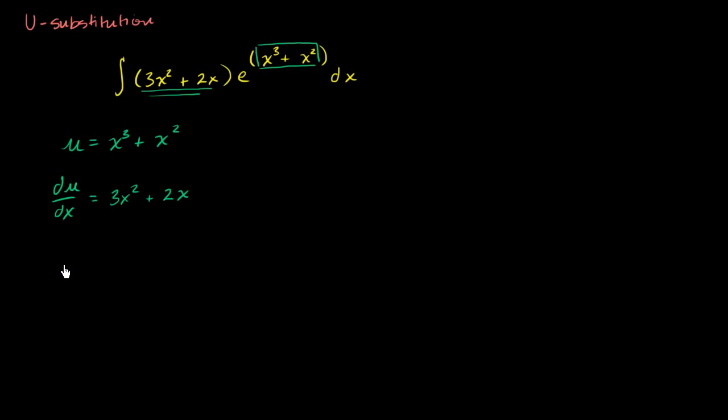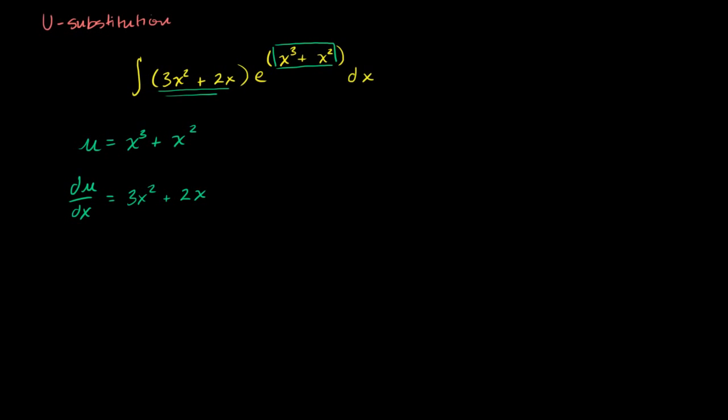And now we can write this in differential form. And du dx, this isn't really a fraction of a differential of du divided by a differential of dx. It really is a form of notation. But it is often useful to kind of pretend that it's a fraction. If you wanted to just get a du in differential form, how much does u change for a given change in x? You could multiply both sides times a dx. And so if we were to pretend that there were fractions, you're going to be left with du is equal to 3x squared plus 2x dx.